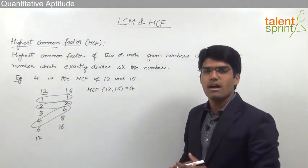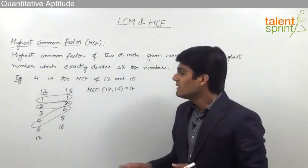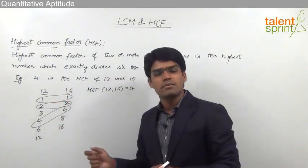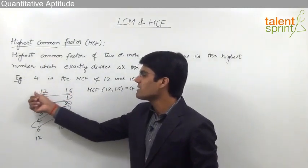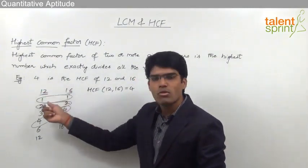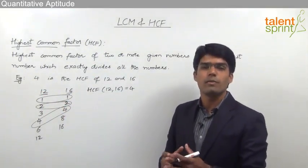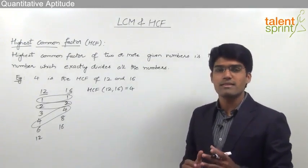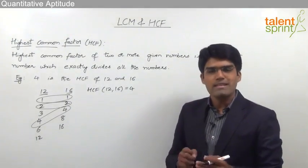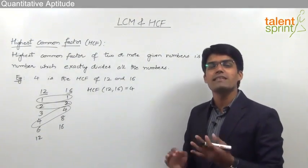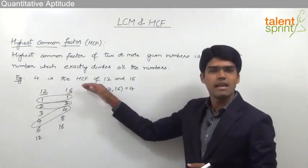This factor-listing method cannot be taken as a standard procedure for finding the HCF, because if the numbers are large — say 112 and 416 — listing all their factors and finding the highest common factor would become a very lengthy task. The best method is to go for continuous division until the remainder becomes zero.